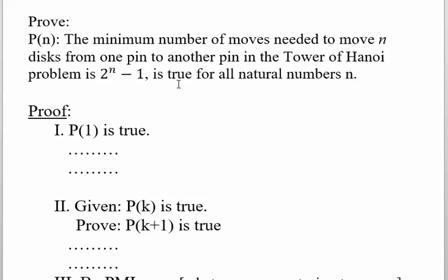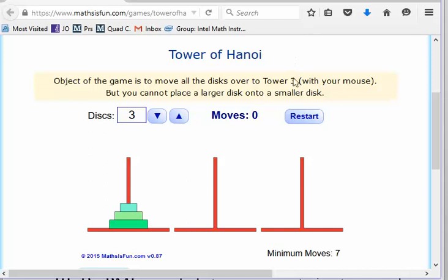Let's do a quick review of how the Tower of Hanoi game works. Here we have the Tower of Hanoi problem with 3 disks, n equals 3.